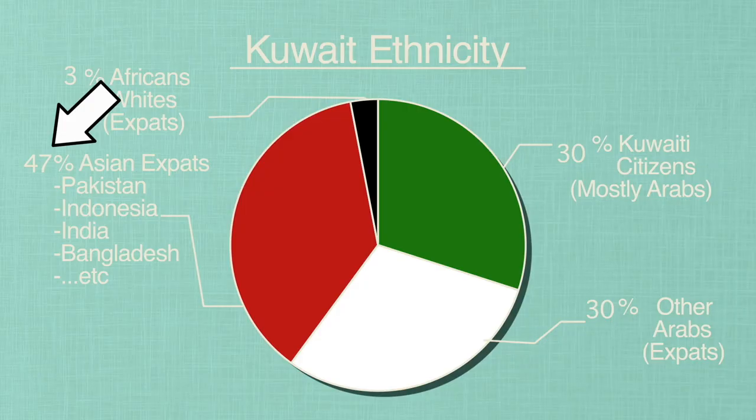Everybody, welcome back to Flag/Fan Friday. Hope you liked the Kuwait episode. You know the deal — every time before we start, I've got to fix up the mistakes I made in the country episode. The demographics graph was a complete mess; the percentage was completely off. I went overboard to a hundred and ten percent. I meant to say thirty-seven percent, not forty-seven percent, for the expats. And I accidentally said India twice — I meant to say India and Indonesia.